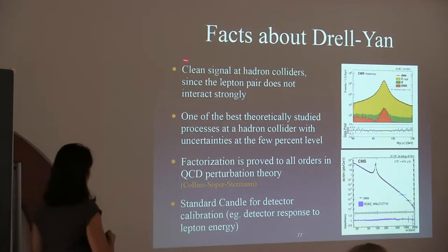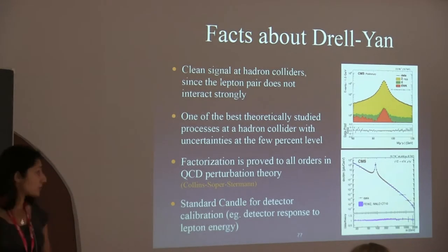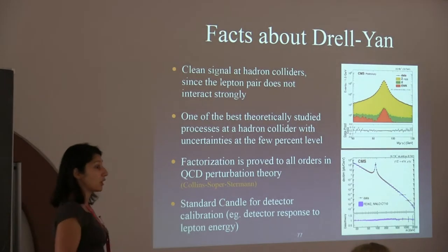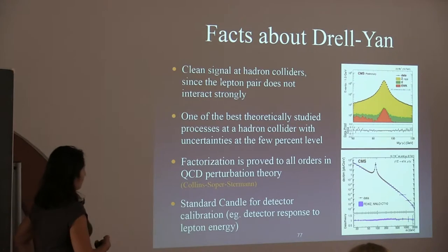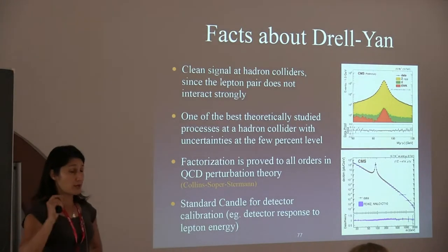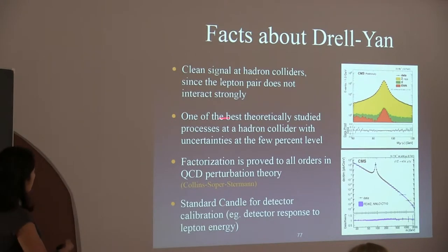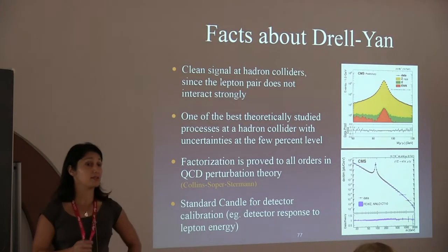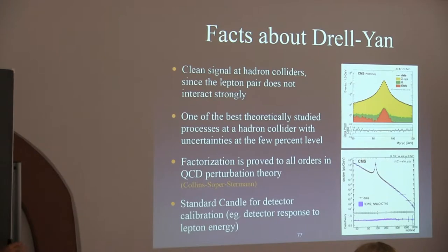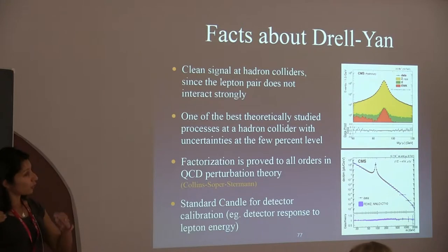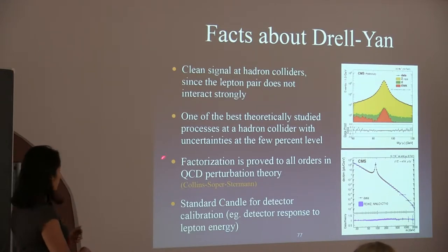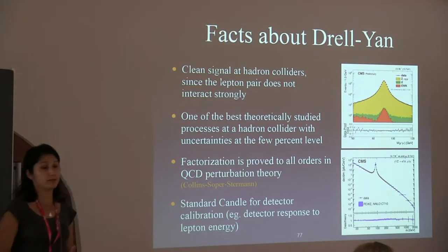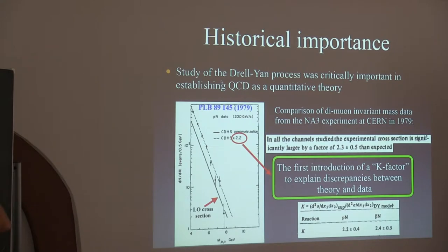Key facts about Drell-Yan: it has a clean signal at hadron colliders because lepton pairs do not interact strongly, unlike jets. It is one of the best theoretically studied processes at hadron colliders, with uncertainties on both theory and experimental sides at the few percent level. Factorization has been proved to all orders in QCD perturbation theory for Drell-Yan by Collins, Soper, and Sterman. It is also a standard candle for detector calibration, for example in measuring detector response to lepton energy.